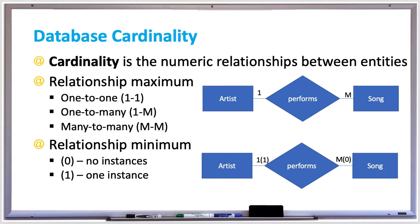Cardinality is the number of associations between entities, or the numeric relationship between rows of one table to the rows of another table. Relationship maximum is the biggest number of instances of one entity that can relate to a row of another entity. Each of the related entities has a relationship maxima, where the number one means one and the letter M means many.